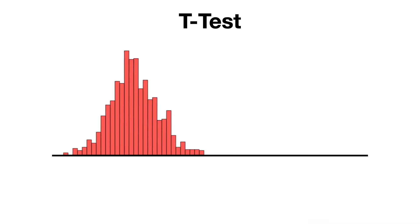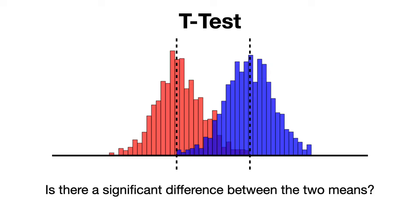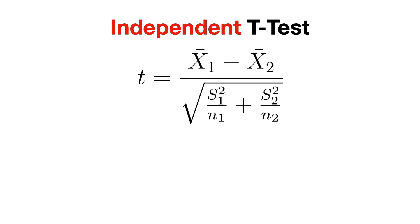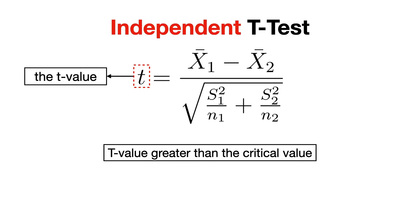So to recap, the t-test is used to determine if there is a significant difference between the means of two normal distributions. We use the following formula to calculate the t-value, and if this value is greater than the critical value, which we extract from the table, then we reject the null hypothesis. Pretty simple, right?